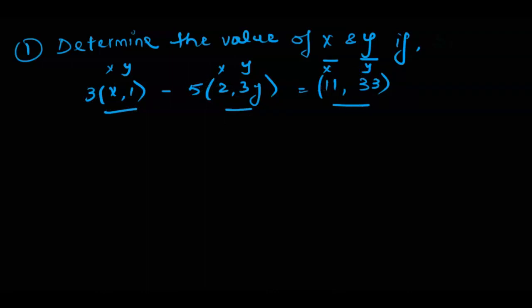So first of all we would multiply the scalar with the vector and we would write it down in simplified form and we get 3x. 3 times 1 is 3 minus 5 times 2 is 10. 3 times 5 is 15. We are taking 5 as a positive right now because I'm putting this negative sign here. So 5 times 2 is 10. 5 times 3 is 15y equal to (11, 33).